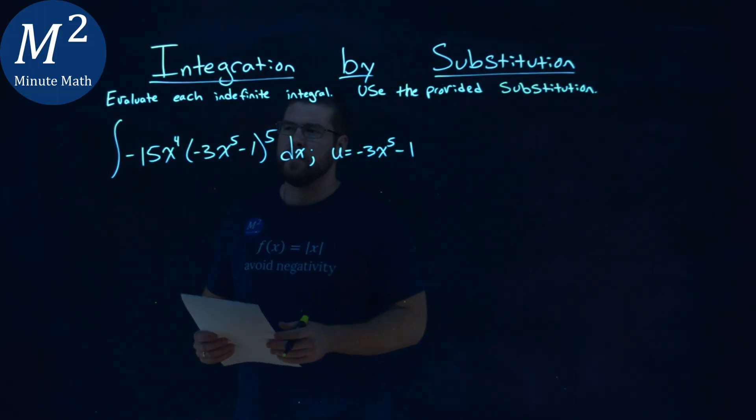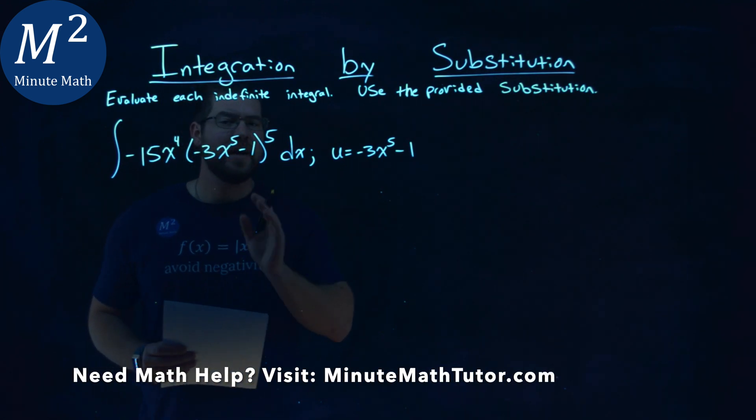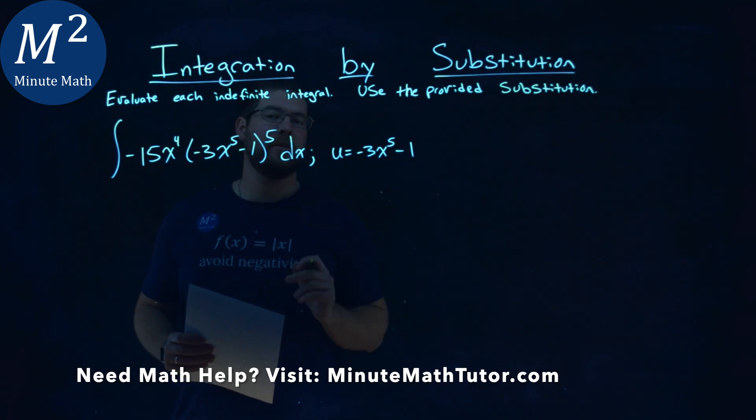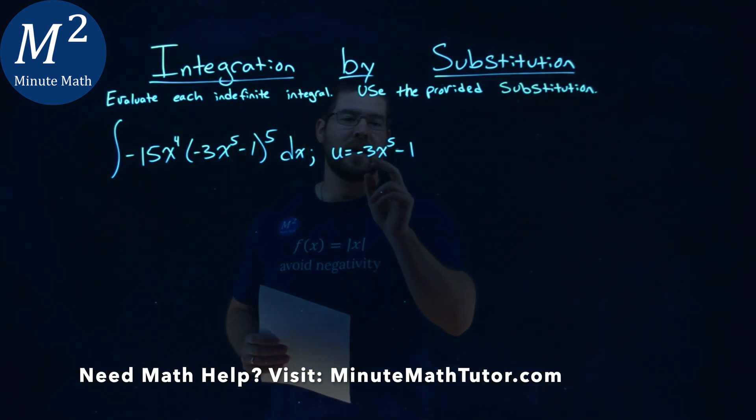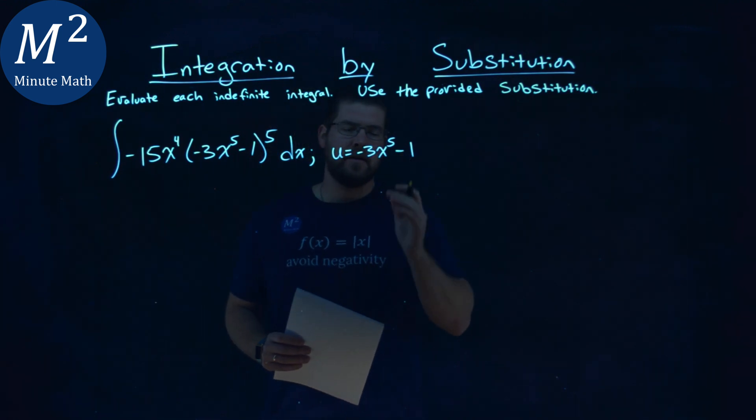We're given this problem right here: the integral of negative 15x to the fourth power times negative 3x to the fifth power minus 5, and that part to the fifth power dx. And we're given a u value of negative 3x to the fifth minus 1, and we need to evaluate this indefinite integral.